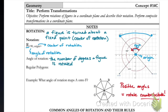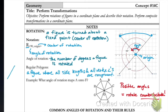Some other definitions we need for rotations: a regular polygon is a figure whose sides and vertex angles are all congruent. For example, a regular triangle has all angles marked congruent and all sides congruent.